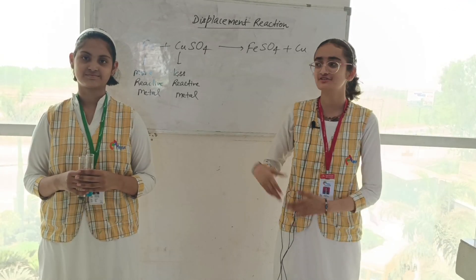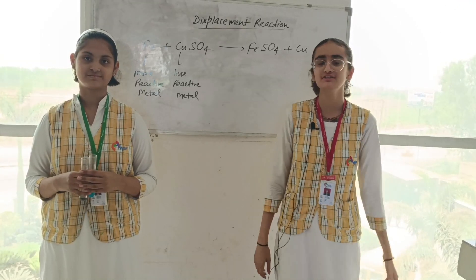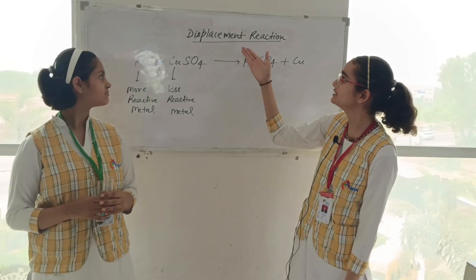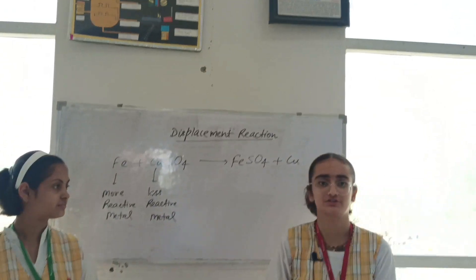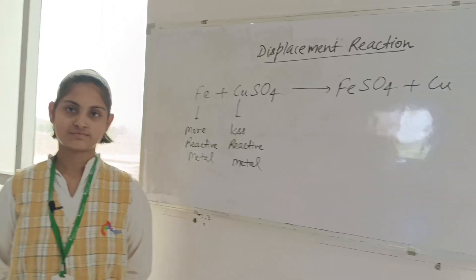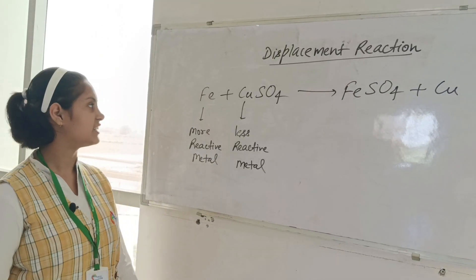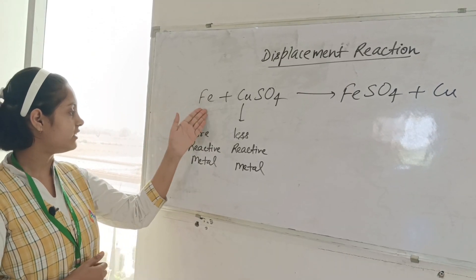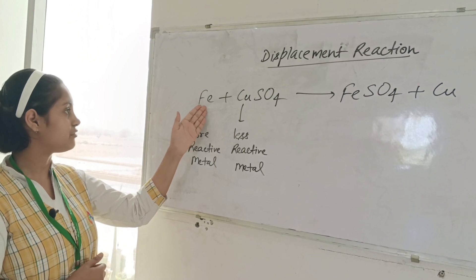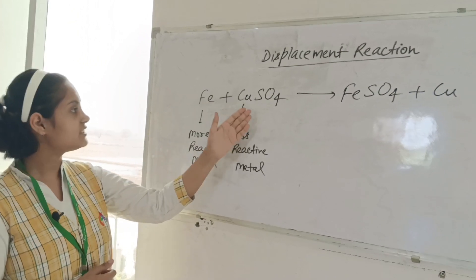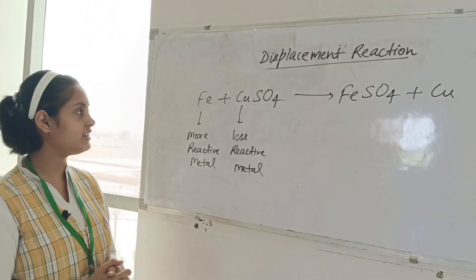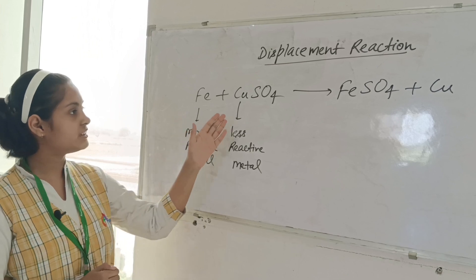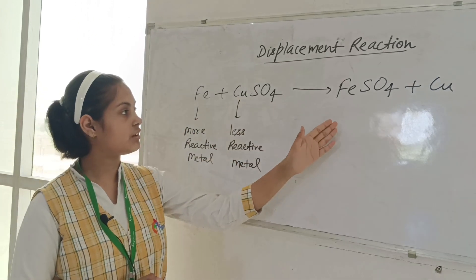Hello everyone, we are the students of class 10 and we are performing an activity regarding displacement reaction. In this reaction we have taken iron (Fe) and CuSO₄, which is copper sulfate, and in the products we get ferrous sulfate and Cu.